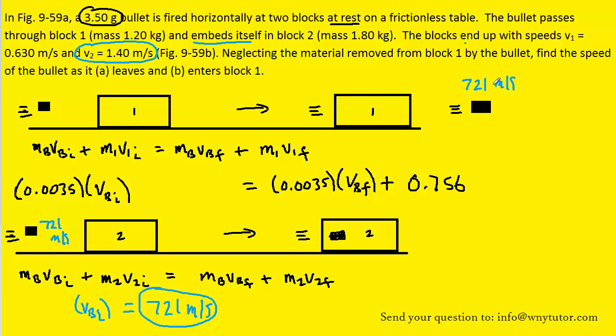but since the bullet had just exited block 1, that becomes the final velocity of the bullet in the first collision. Recall that we didn't know that from the first equation, but now we do.